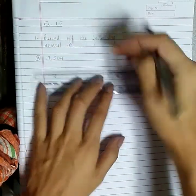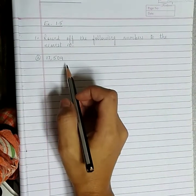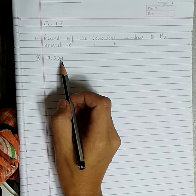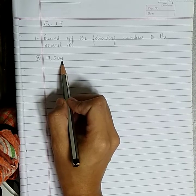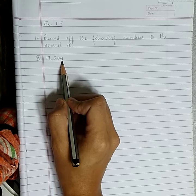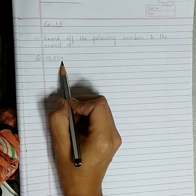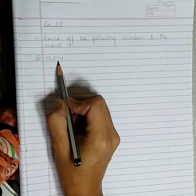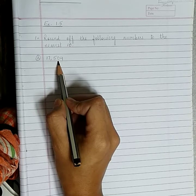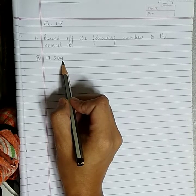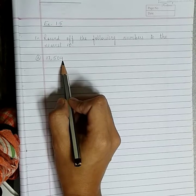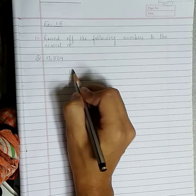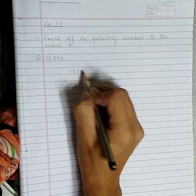Copy question number one, part A: seventeen thousand five hundred four. We will round to the nearest ten. We will look at the one's digit. Four is less than five, so we do nothing to the tens place. The answer to nearest ten is 17,500.